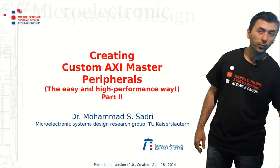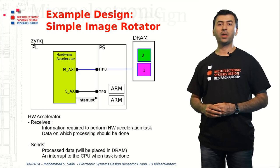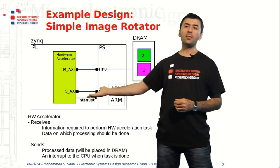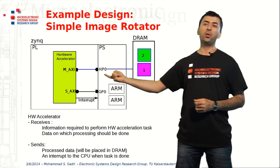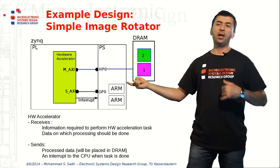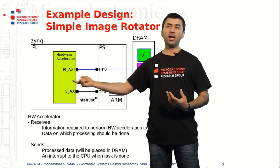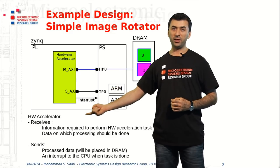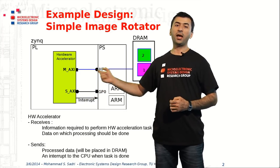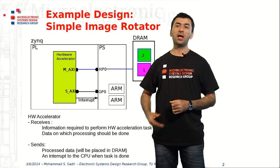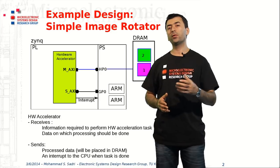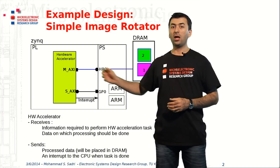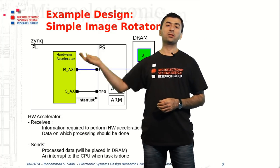A very quick overview of what we had previously: the basic idea is to create a very simple image rotator as a hardware accelerator. Our image rotator is responsible for reading an image from the DRAM memory connected to the Zinc PS, performing a basic image rotation operation, and then writing back the result to DRAM. Our hardware accelerator has two interfaces: one AXI slave interface and one AXI master interface.